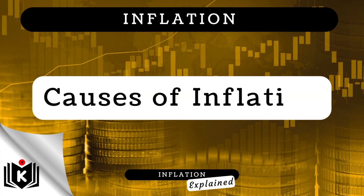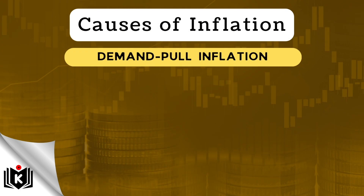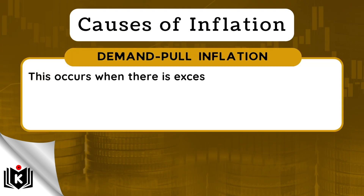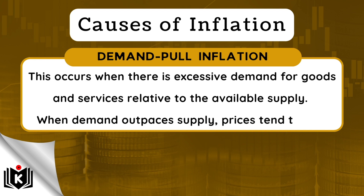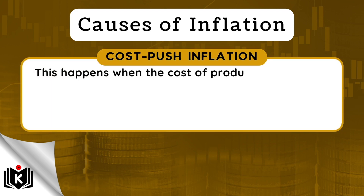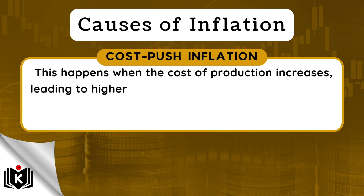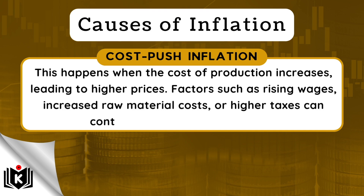Inflation can be caused by various factors. In this next section, we will discuss these two factors, starting with demand-pull inflation. This occurs when there is excessive demand for goods and services relative to the available supply. When demand outpaces supply, prices tend to rise. Another cause of inflation can be cost-push inflation. This happens when the cost of production increases, leading to higher prices. Factors such as rising wages, increased raw material costs, or higher taxes can contribute to cost-push inflation.